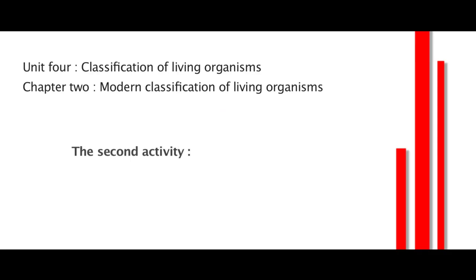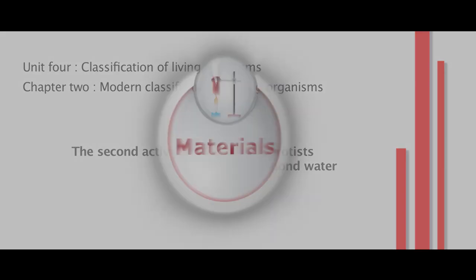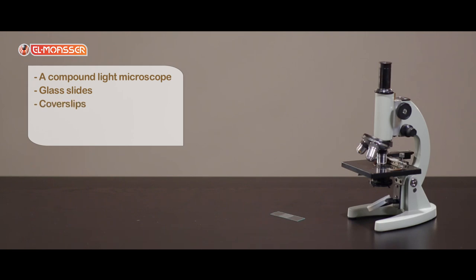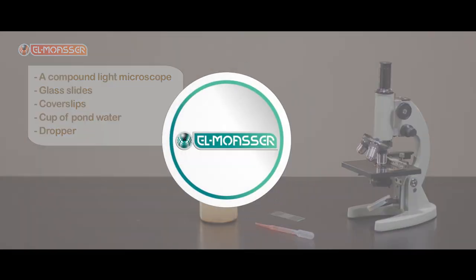The second activity: examining protists in a sample of pond water. The materials: a compound light microscope, glass slides, cover slips, cup of pond water, and dropper. Procedure: